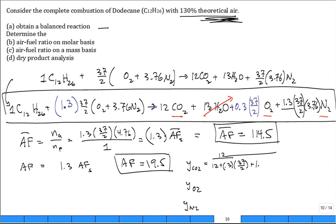And then similarly, 1.3 times 37/2, 3.76. So it's 12 divided by 107.98.